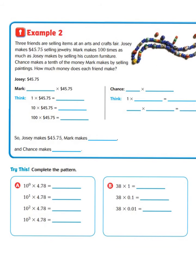Now let's take a look at another example. Three friends are selling items at an arts and crafts fair. Josie makes $45.75 selling jewelry. Mark makes 100 times as much as Josie makes by selling his custom furniture. Chance makes a tenth of the money Mark makes by selling paintings. How much money does each friend make? We know that Josie makes $45.75.